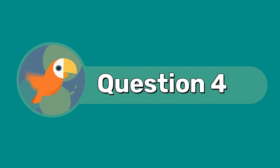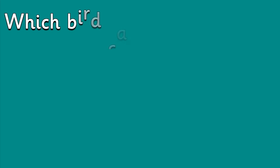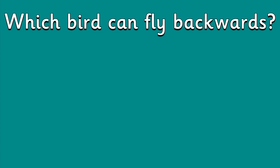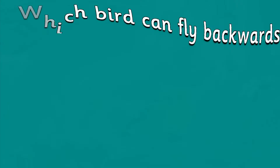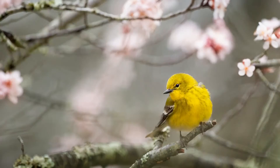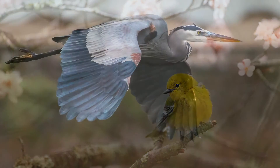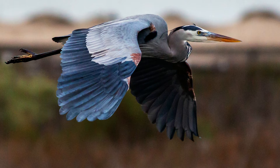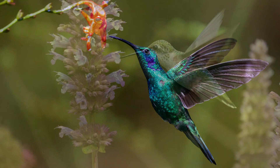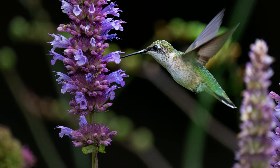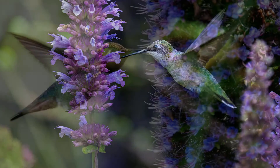Question 4: Which bird can fly backwards? Birds like flycatchers, warblers, egrets and herons can move slightly backwards using the fluttering method. But the amazing hummingbird is the only bird that can actually fly backwards without relying on the wind.